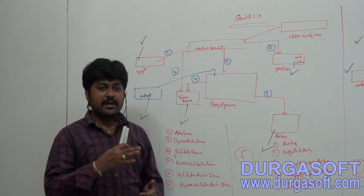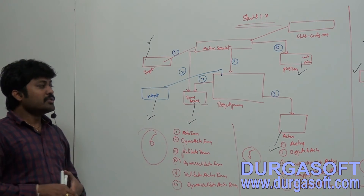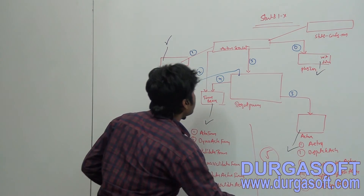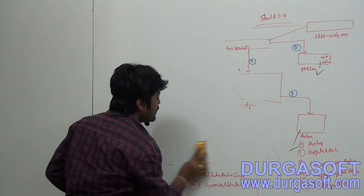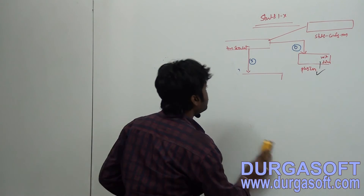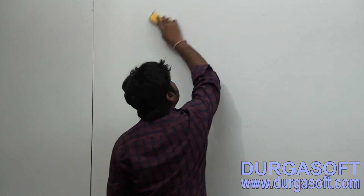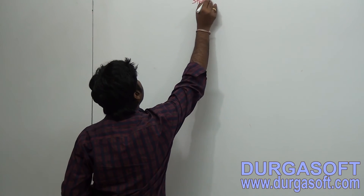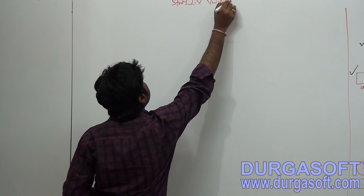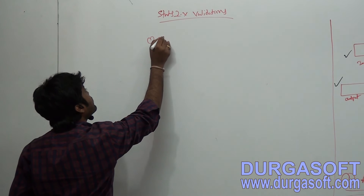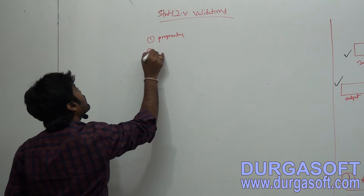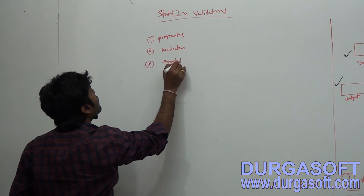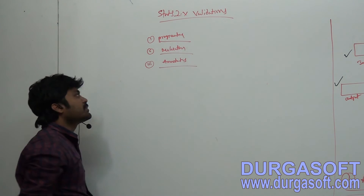Using a single ActionSupport class you can execute both validations and controller operations. They reduced approximately 11 classes down to just one. In Struts 2x there are three types of validations: programmatic approach, declarative (XML file), and annotations.